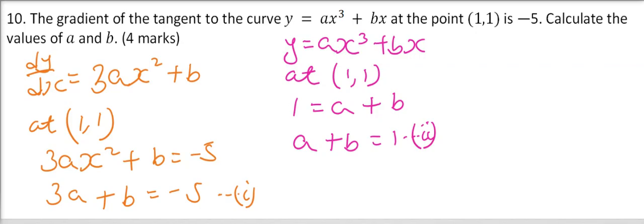Therefore we can solve them by eliminating one of the unknowns. 3a plus b equals minus 5 and we have a plus b equals 1. So we can eliminate b by subtracting.